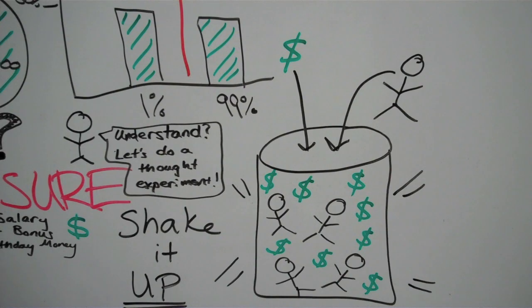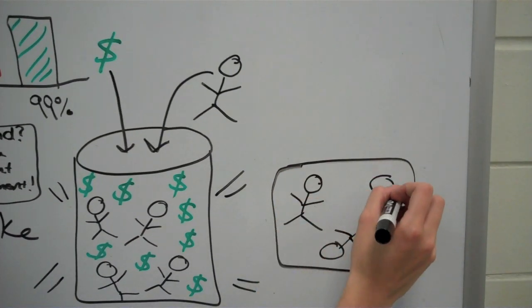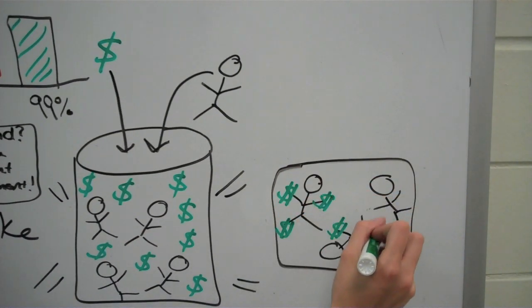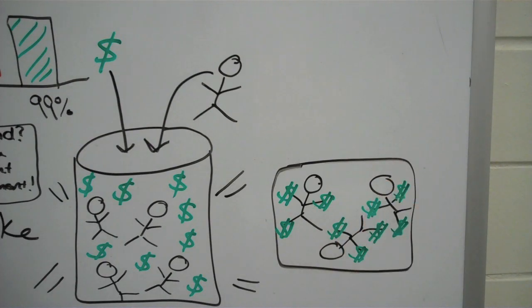In this jar, everyone has the same amount of money attached to them. So, the wealth distribution is equal. This is what you claim to want, right? Right!